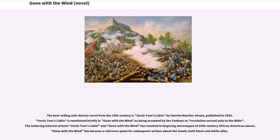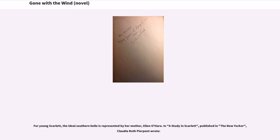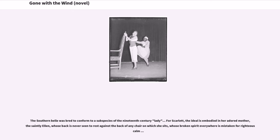Gone with the Wind has become a reference point for subsequent writers about the South, both black and white alike. The Southern Belle is an archetype for a young woman of the antebellum American South upper class, believed to be physically attractive and personally charming with sophisticated social skills. The novel's heroine, Scarlett O'Hara, charming though not beautiful, is a classic Southern Belle. For young Scarlett, the ideal Southern Belle is represented by her mother, Ellen O'Hara. Claudia Roth Pierpont wrote that the Southern Belle was bred to conform to a subspecies of the 19th-century lady, whose broken spirit everywhere is mistaken for righteous calm.